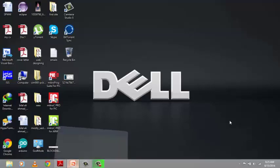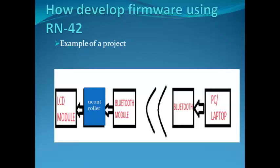Let's start with a simple example. We'll look at how to develop firmware using the RN42. Here we have an LCD module, a microcontroller, and a Bluetooth module at a remote location. We also have a PC with a Bluetooth module, and a laptop with a built-in Bluetooth module at a central control room. We want to send data from the remote location to the central control room through two Bluetooth devices, with a distance of about 100 meters — which is easily handled by Bluetooth modules.